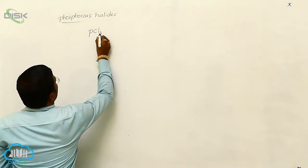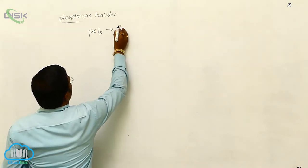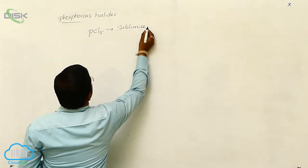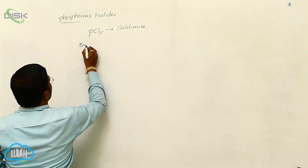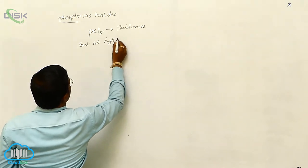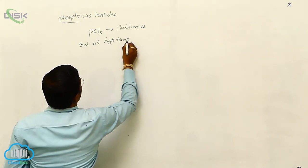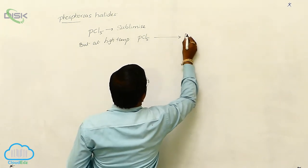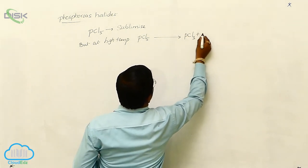Phosphorus pentachloride at low temperature will show sublimized character, but at high temperature phosphorus pentachloride dissociates and produces phosphorus trichloride.